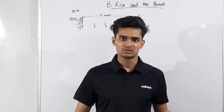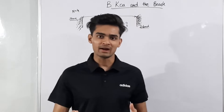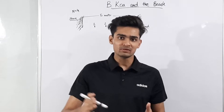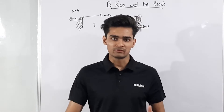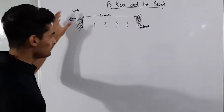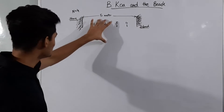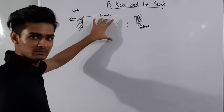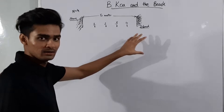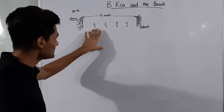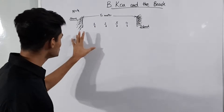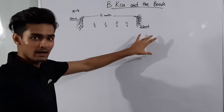The question says that there is a shore of a sea and an island which is exactly n+1 meters away from the shore. So if n equals 4, there is a distance of 5 meters between the shore and the island. We can place exactly n points between the shore and the island.